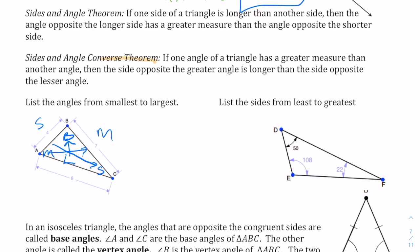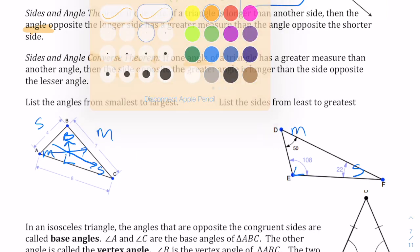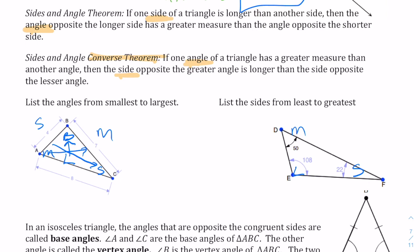The next theorem is the converse — remember, converse means switching the hypothesis and conclusion. Here we talk about the angle first and find information about the side. Looking at the other triangle, labeling angles from smallest to largest: the smallest is 22, the medium is 50, and the largest is 108. The relationship is always between angles and the sides across from them.